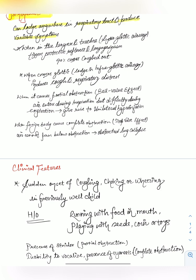When it lodges in the trachea and larynx or supraglottic airway, it triggers protective reflexes and causes laryngospasm. In 90% of cases, the foreign body is coughed out. When it lodges in the infraglottic airway, it induces cough and respiratory distress.